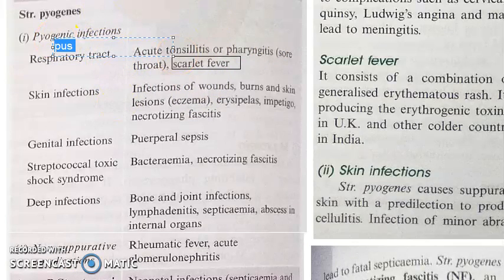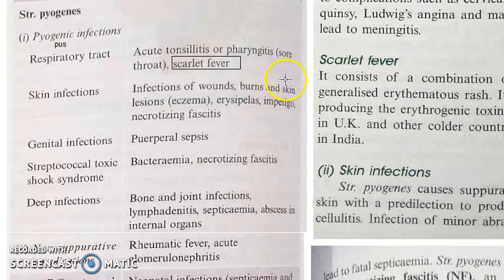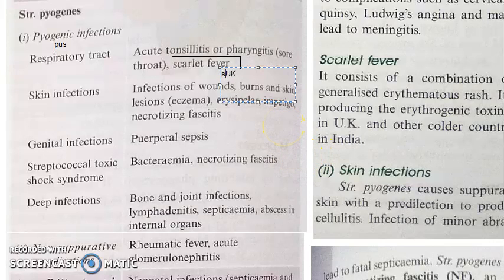Pyogenic means pus-forming. Scarlet fever is a combination of sore throat and an erythematous rash. It is caused by bacteria that produce erythrogenic toxin. It is not commonly seen in India now — it happens mainly in the UK and other colder countries. So scarlet fever: sore throat plus rash, usually seen in the UK.